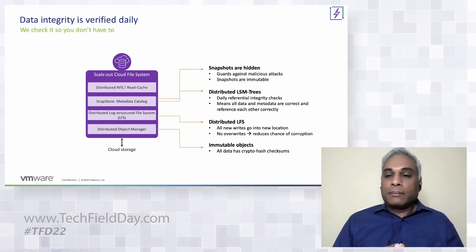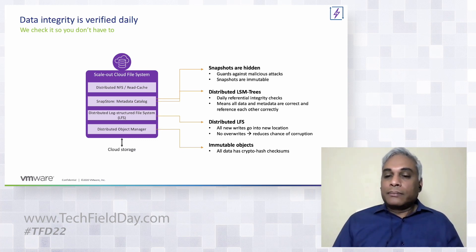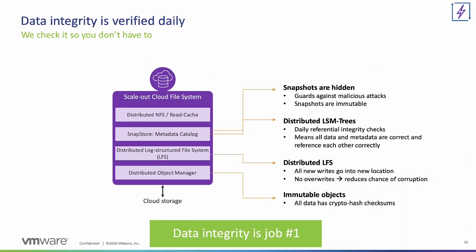All our snapshots are hidden — not visible to end users or anyone — so there are no malicious attack vectors. Even if there were, snapshots are immutable; you can only clone them, not change them. We've taken great care to verify data, and beyond the file system, we do compliance checks in our orchestrator as well, proactively ensuring everything we track is in good shape. This combination of low-cost cloud file system that can run workloads plus strong data integrity is what gives customers confidence.